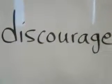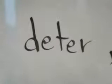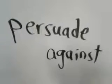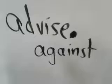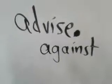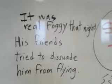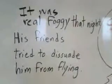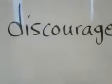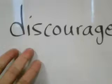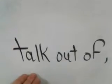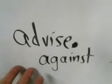The synonyms are: discourage, deter, prevent, stop, talk out of, persuade against, advise against, argue out of. For example: it was a really foggy night, and his friends tried to dissuade him from flying — they tried to discourage him from flying, talk him out of flying, advise against flying.